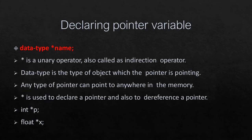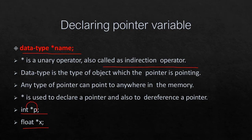How to declare a pointer variable? The syntax is: data_type *variable_name. For example: int *p or float *x. The star (*) is a unary indirection operator that points to a memory location. int *p means p holds a memory address and the integer value is stored at that location. float *x means x points to a memory location storing a floating point value.